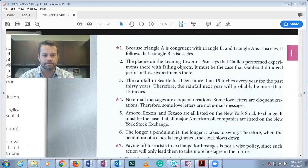Number three: The rainfall in Seattle has been more than 15 inches every year for the past 30 years, therefore the rainfall next year will probably be more than 15 inches. The word 'probably' means we're not trying to prove this conclusively or beyond a shadow of a doubt or that the conclusion follows necessarily.